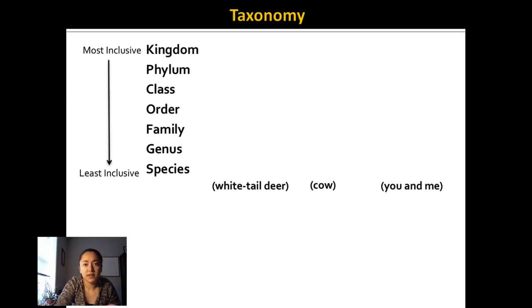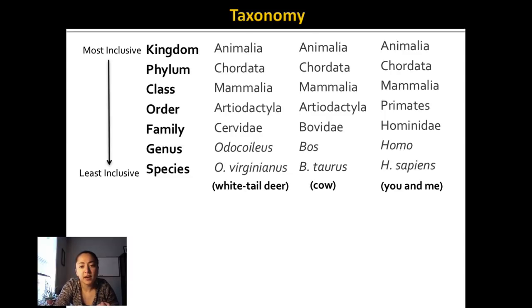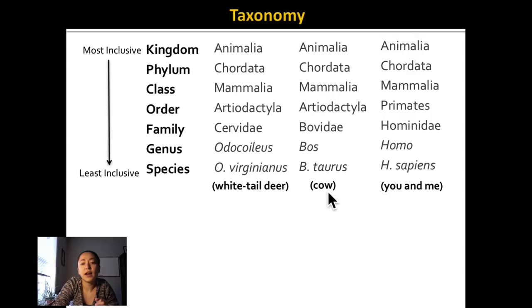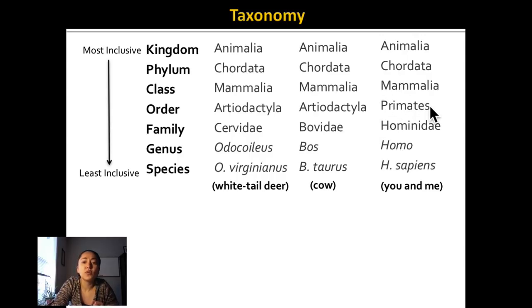Let's look at an example of why we use taxonomic classifications. If we look at the taxonomic groupings for white-tailed deer, cows, and humans, taxonomy helps you see which organisms are more closely related to others. White-tailed deer, cows, and humans all fall within kingdom Animalia, phylum Chordata, and class Mammalia. But when we get down to orders, they separate: white-tailed deer and cows are in the order Artiodactyla, whereas humans are in the order Primates. So since white-tailed deer and cows are in the same order, they are more closely related to each other than they are to humans.